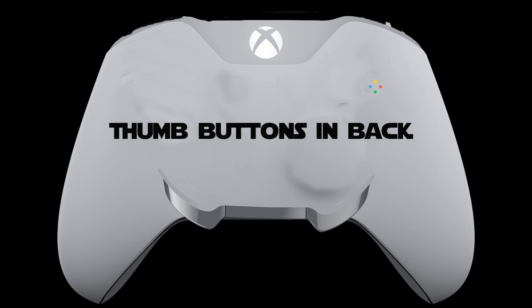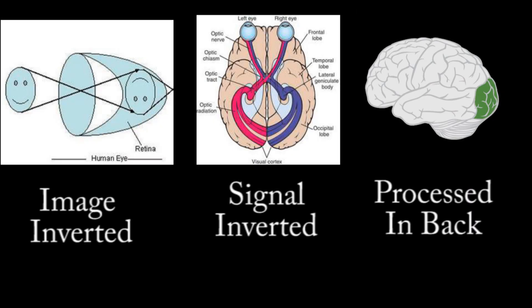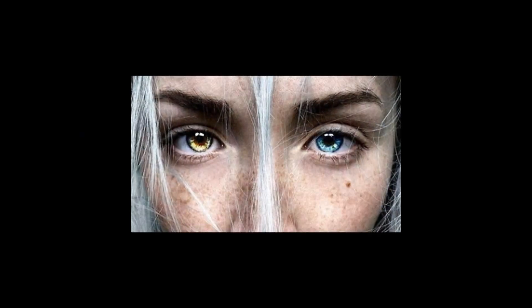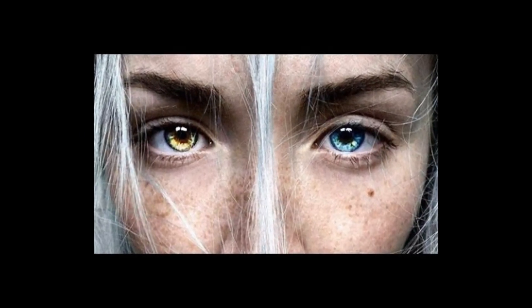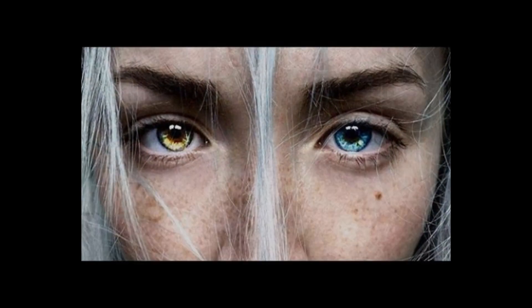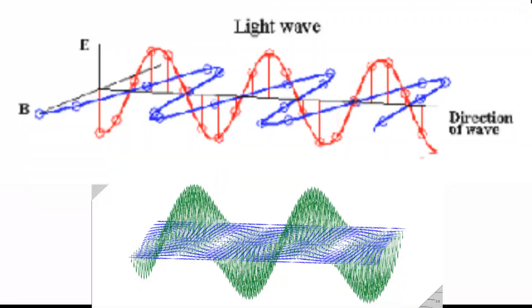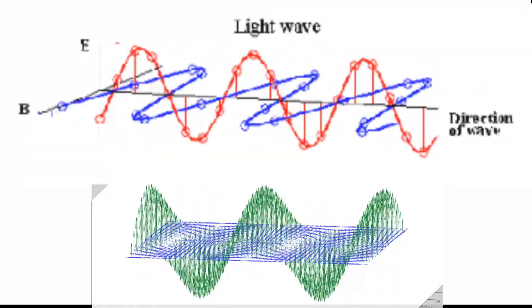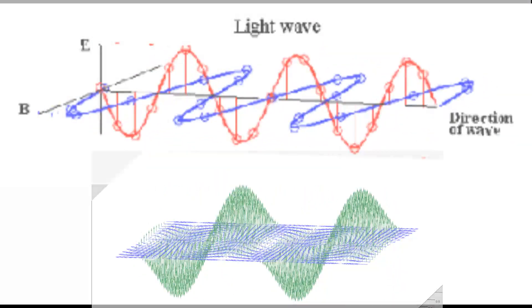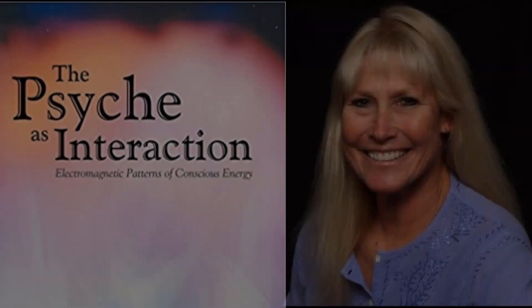If eyes are the windows to our soul, let's follow that route to understand consciousness better. Light is electromagnetic in nature, which is good because based on the work of many, consciousness is also electromagnetic in nature.